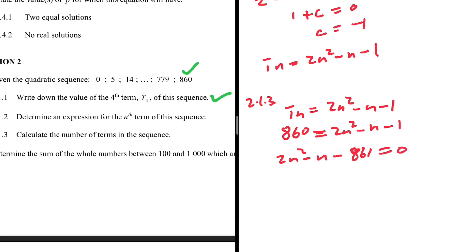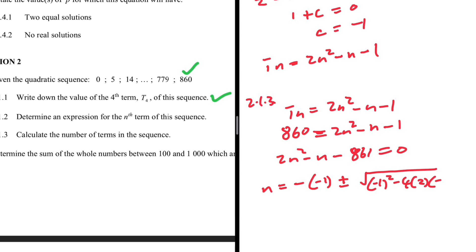We get 2n² - n - 861 = 0. Finding factors of 861 that add to -1 is painful, so let's use the quadratic formula. n = [-b ± √(b² - 4ac)] / 2a, where b = -1, a = 2, and c = -861.